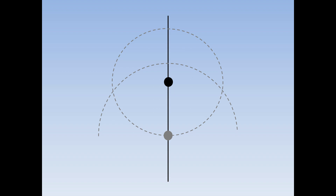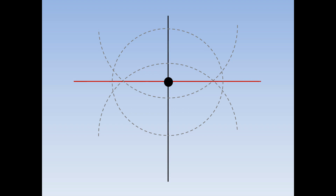Keeping the compass exactly the same length, move the sharp end over to where the circle and the line cross over and draw another half circle. Finally, draw a line through the two places where the two half circles cross over. This line is perpendicular to the other line.